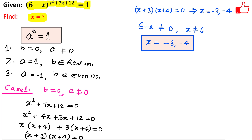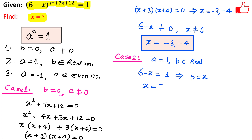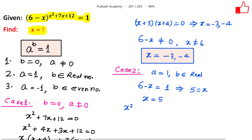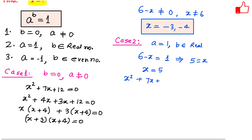For Case 2, a equals 1 and b is a real number. Since a is 6 minus x, we have 6 minus x equals 1, which gives x equals 5. We then check that b, which is x squared plus 7x plus 12, is real. For x equals 5, this becomes 25 plus 35 plus 12, which is indeed real.